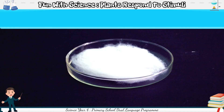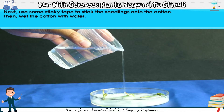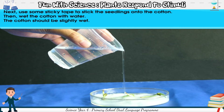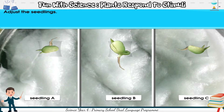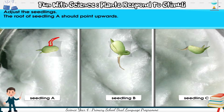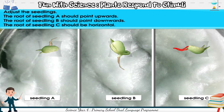First, put some cotton onto the petri dish. Next, use some sticky tape to stick the seedlings onto the cotton. Then wet the cotton with water — the cotton should be slightly wet. Put the petri dish in a vertical position and adjust the seedlings. The root of seedling A should point upwards. The root of seedling B should point downwards. The root of seedling C should be horizontal.